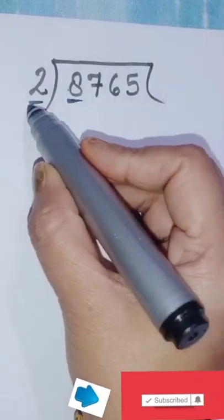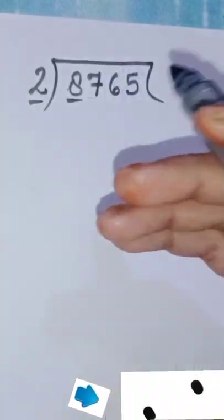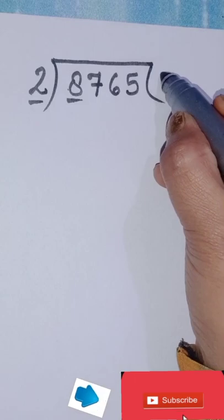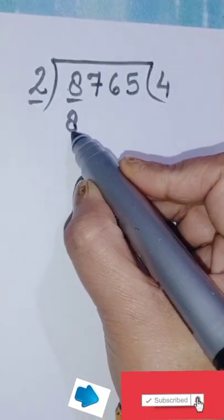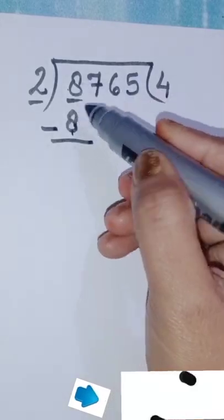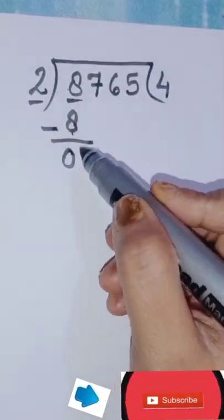First, we will check the first two terms. We will get 8 in the table. If we get it, how many times we get it? 2, 4, 8. We will write here. We will minus it. 8 minus 8 is 0. We will write it and cross it.